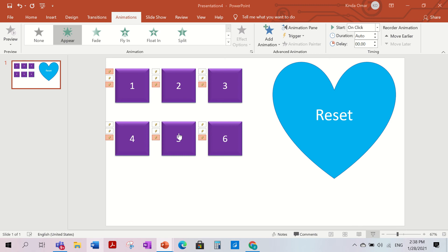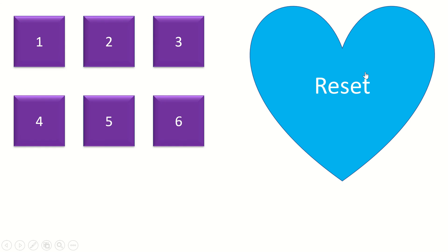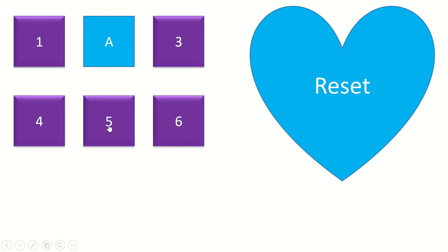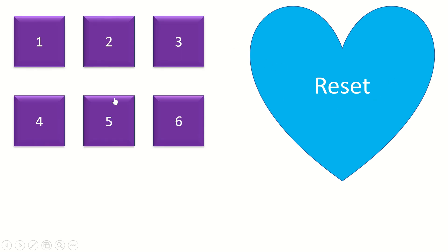Now when you play and reveal everything, you can just press the reset heart button and all the front covers come back. For example: open A, A, Q, Q, D, D — then press reset and all of them reappear. And that was our game today! You can make as many squares as you want.